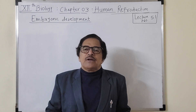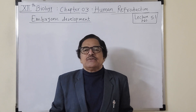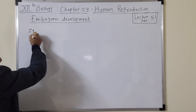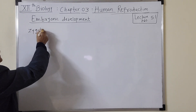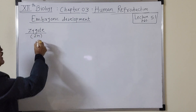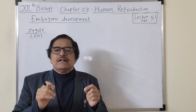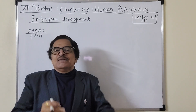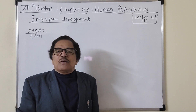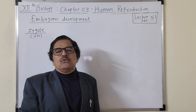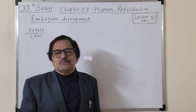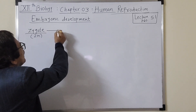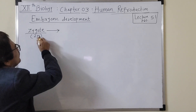We have been learning about embryonic development after fertilization. Fertilization produces a zygote, which is a diploid cell formed by the fusion of one haploid sperm and one haploid ovum. This occurs inside the body of the female — particularly the site of formation is the ampulla of the oviduct or the fallopian tube.